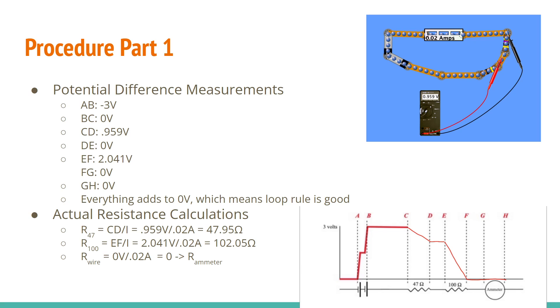After measuring the potential differences around each section, these are my readings. And then everything adds to zero, which means the loop rule is good. And then to calculate the actual resistances, I just took each of the relevant sections and divided them by the current I to get the resistor numbers, which are 47.95 and 102.05. That means my numbers were pretty close and then my potential difference chart that I completed.